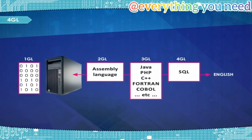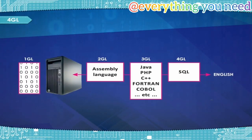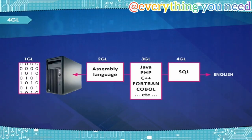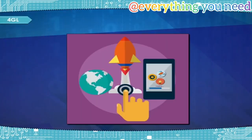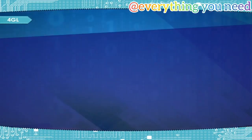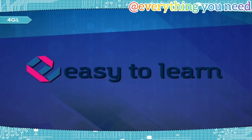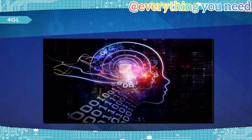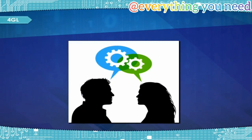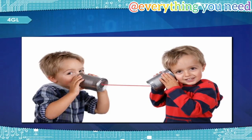4GL — this generation of language allows non-programmer users to write programs, to query databases, and to generate custom reports. Characteristics of 4GL include: user-friendly, fast execution, easy to learn and program by non-programmer users, and use of artificial intelligence and neural networks. 4GL languages are closer to human language than other high-level languages and are accessible to people without formal training as programmers.